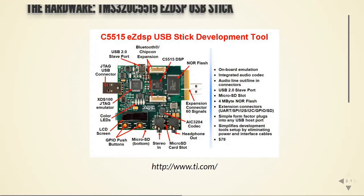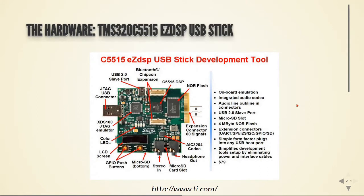We also have another slave USB port. We have a Bluetooth expansion for Bluetooth boards. We have an expansion connector for 60 signals to access different pins on the DSP. So we have an extension connector for UART, SPI, I2S, I2C, and GPIOs. We have a micro SD card underneath. We have some push buttons, an LCD screen, and some color LEDs. And this is more or less what we have on the board.